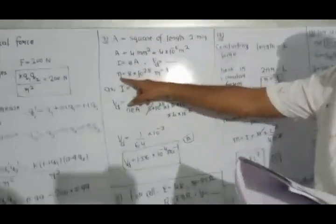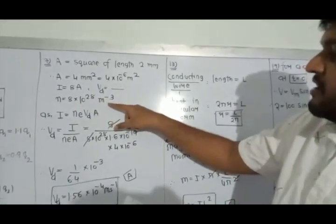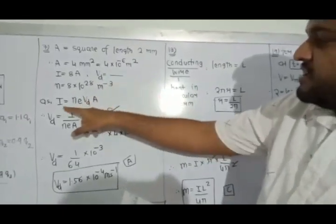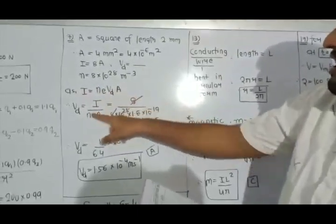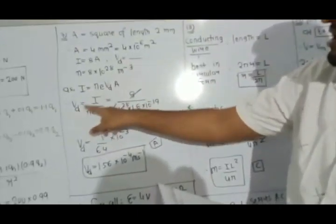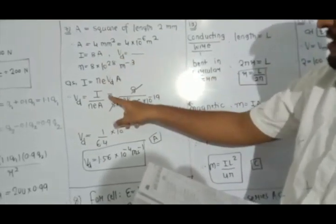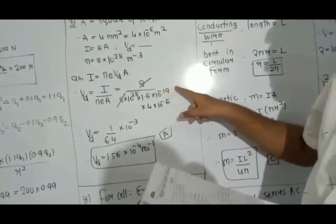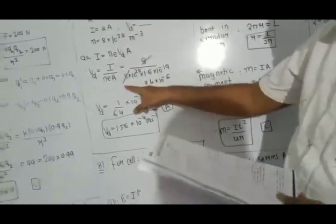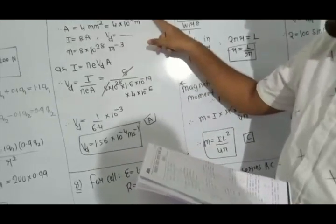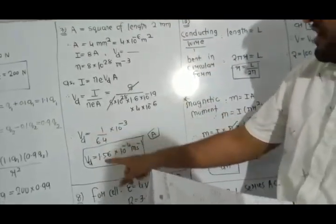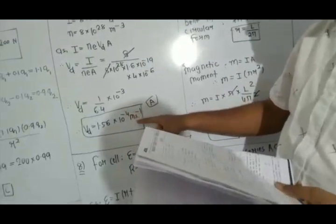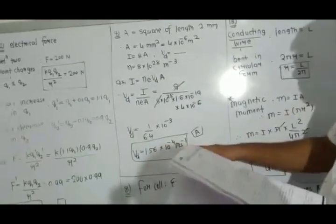Number density of charge carriers n = 8 × 10²⁸ per m³. Using I = n·e·vd, drift velocity vd = I/(n·e·A) = 8 / (8×10²⁸ × 1.6×10⁻¹⁹ × 4×10⁻⁶) = 1.56 × 10⁻⁴ m/s. Option A.